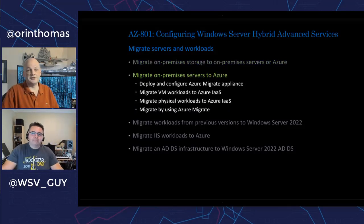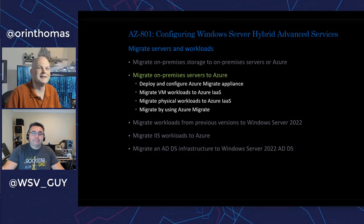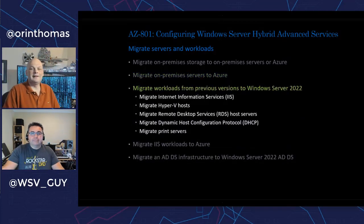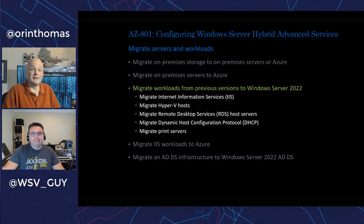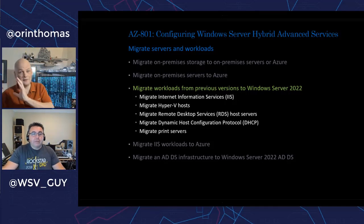The next one is straightforward — you've got on-prem servers, how do you lift and shift them to Azure? This is the lift-and-shift part of the certification. You've got Windows Server 2008 and how do you move it to Windows Server 2022? You want to pick it up and just update your operating system platform.